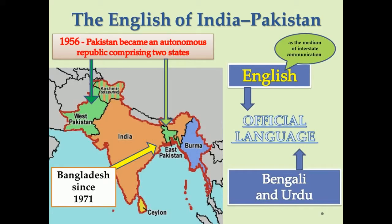In 1956 Pakistan became an autonomous republic comprising two states, East and West. Bengali and Urdu were made the national languages of East and West Pakistan respectively, but English was adopted as a third official language and functioned as the medium of interstate communication. In 1971 East Pakistan broke away from its western partner and became the independent state of Bangladesh.